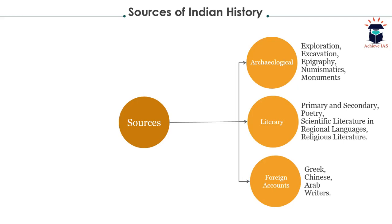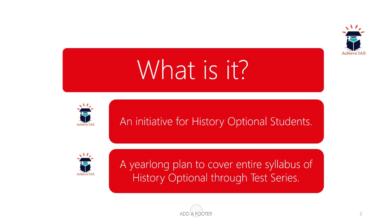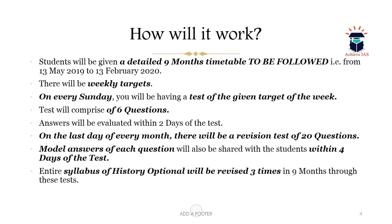For those seeing this video for the first time: this initiative is for history optional students and follows a detailed nine-month timetable from May 13, 2019 to February 13, 2020. Weekly and daily targets will be shared with you. Every Sunday, a test of at least six questions will be held — the number can increase if a topic requires questions from multiple angles.